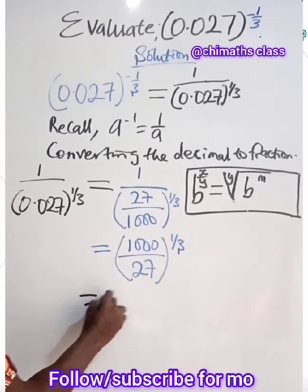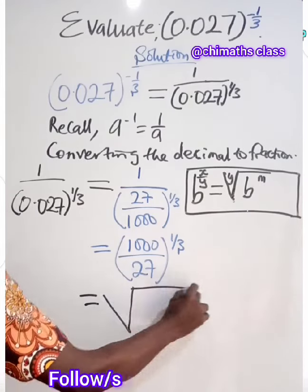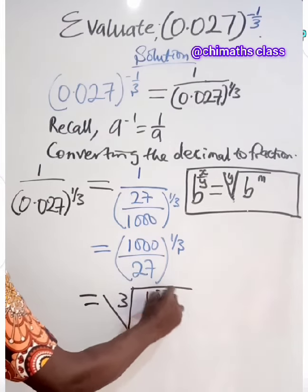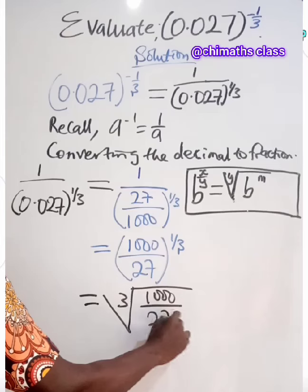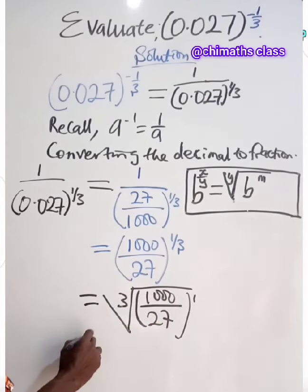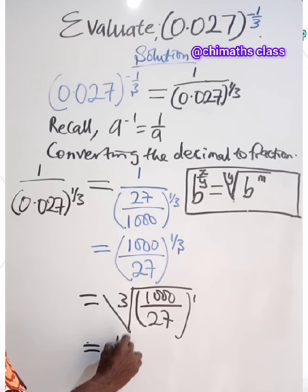So that we'll have the cube root of 1,000 then divided by 27, all raised to power 1. Cube root of 1,000 is equals to 10. Then cube root of 27 is 3.